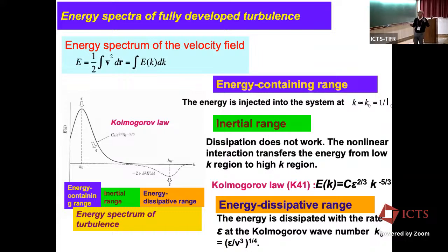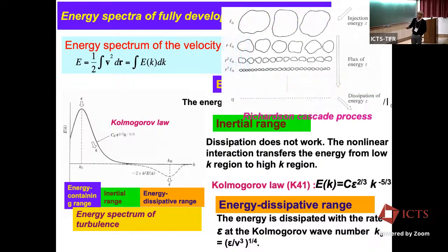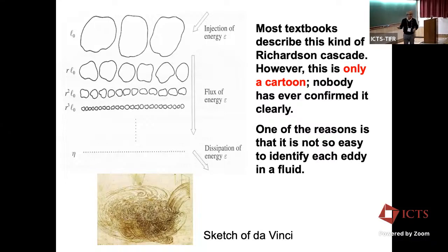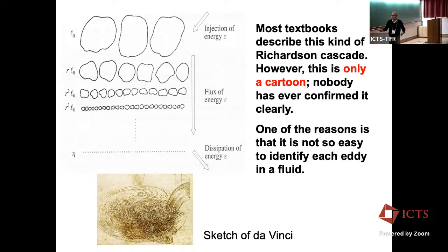You are specialists in turbulence, so you don't need detailed explanation here. The inertial range column flow is believed to be sustained by the Richardson cascade process. However, most textbooks describe this Richardson cascade process, but it is only a cartoon — nobody has ever confirmed it clearly. One reason is that it is not easy to identify each eddy in a fluid. You can recall the famous sketch by Leonardo da Vinci: the flow comes from a duct, makes large eddies, and small eddies spiral from the large eddies. But this is probably just a cartoon.